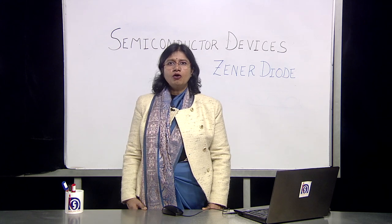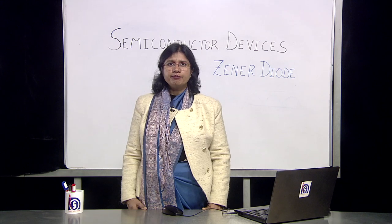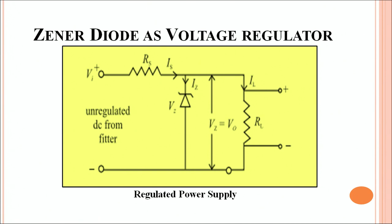Let's understand the working of a Zener diode via the circuit diagram. In this circuit diagram, the Zener diode is connected in reverse bias via the unregulated DC which we obtained from the filter. A full wave rectifier converts the AC signal into DC, yet there are ripples. We pass it through the filter but the output is still not very smooth. We input that current through the Zener diode which is in reverse bias, operating in the breakdown region.